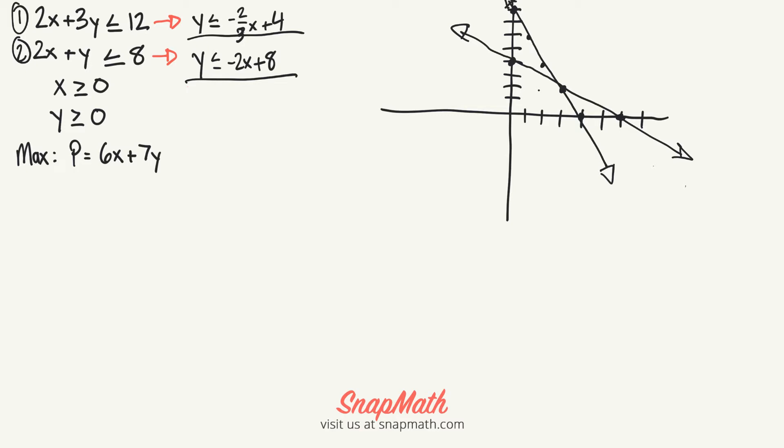X is greater than 0 is going to be a line that goes right through here, and Y greater than 0 is right through here. If we were to shade all of them, the first one was this line right here.